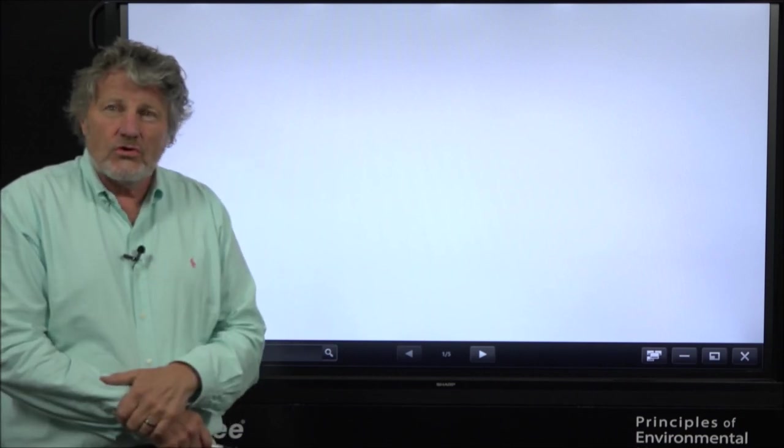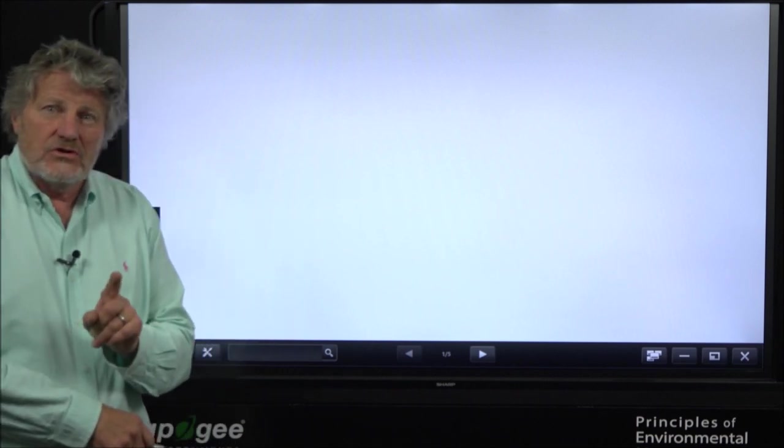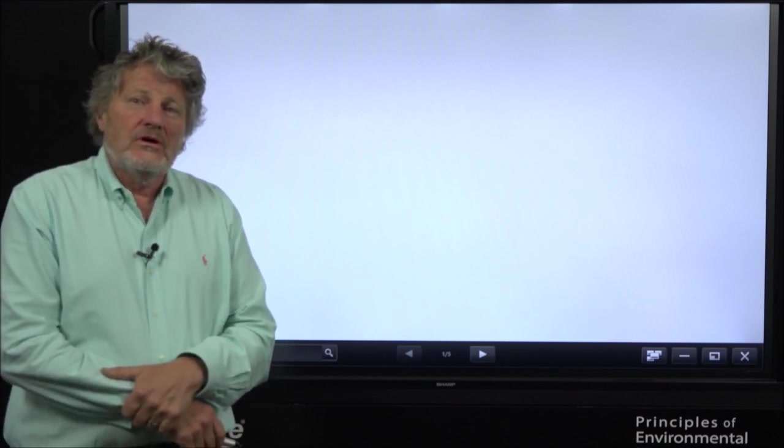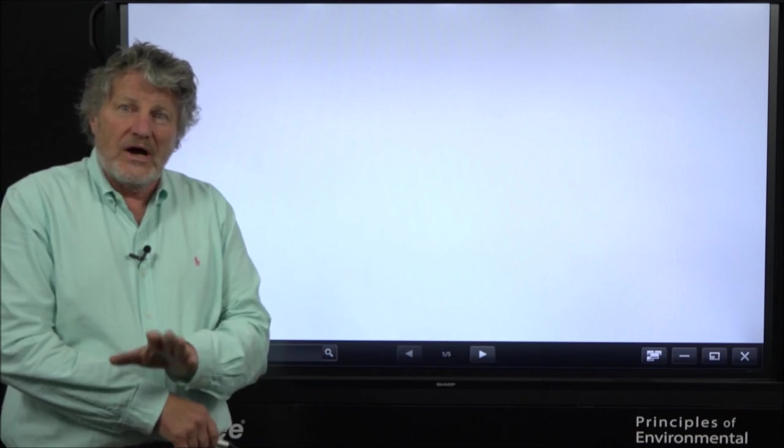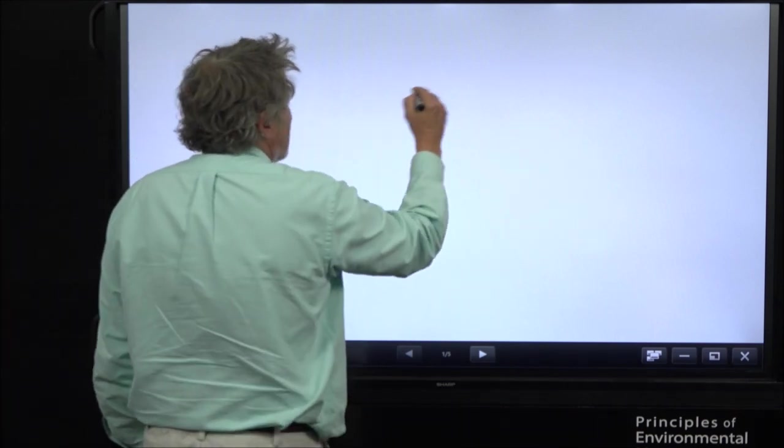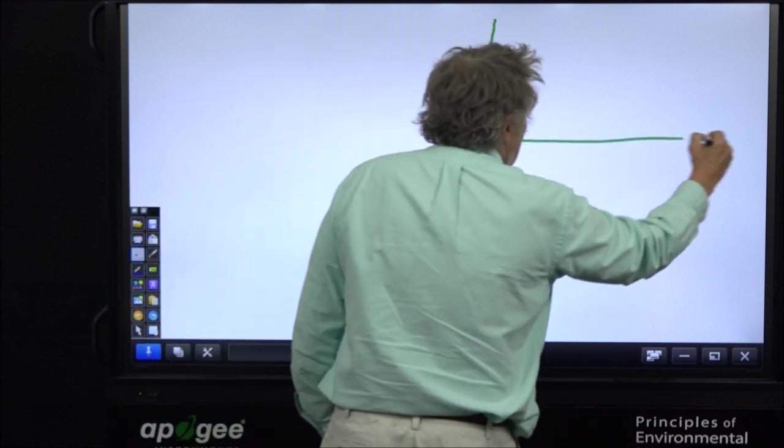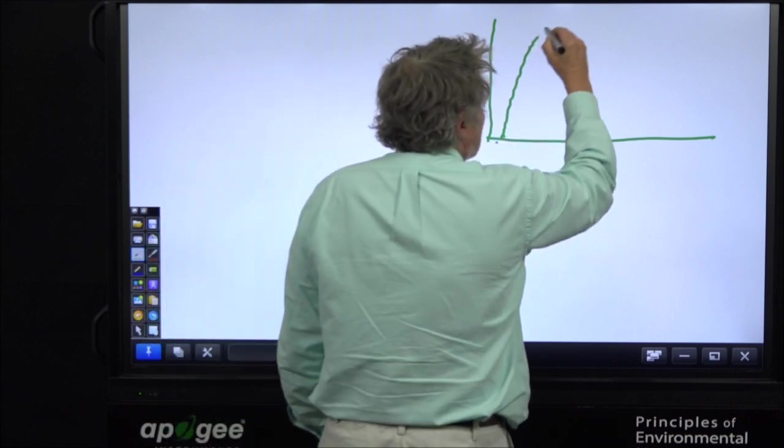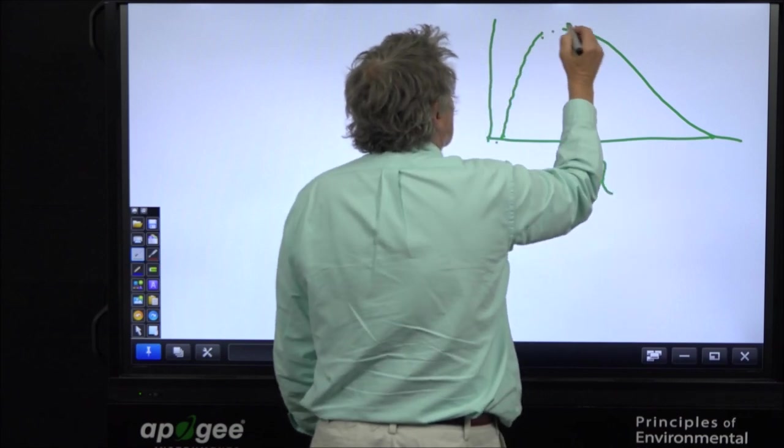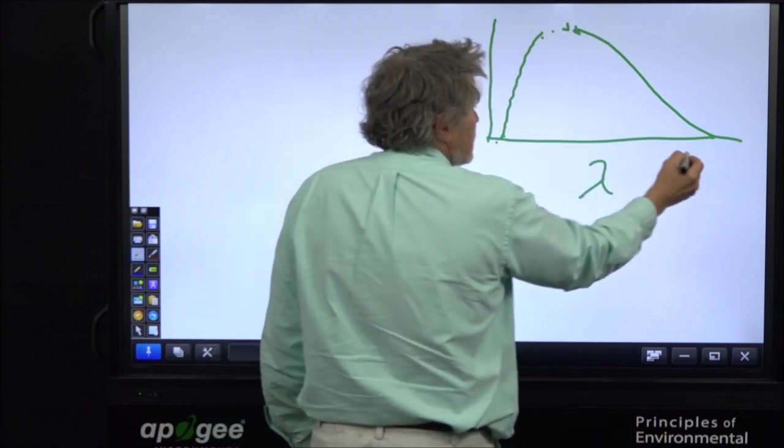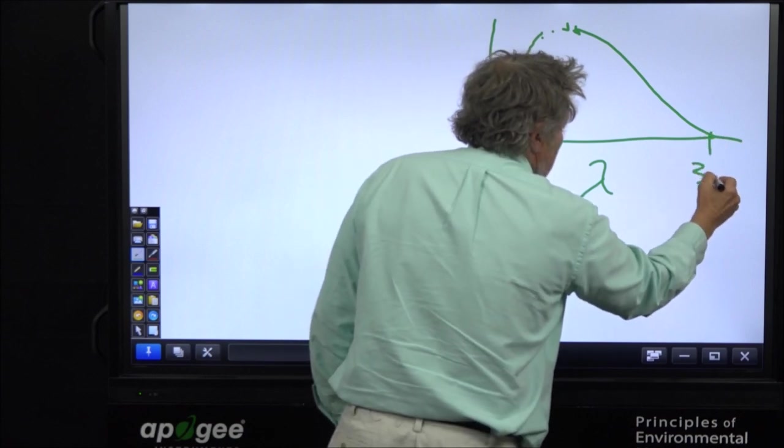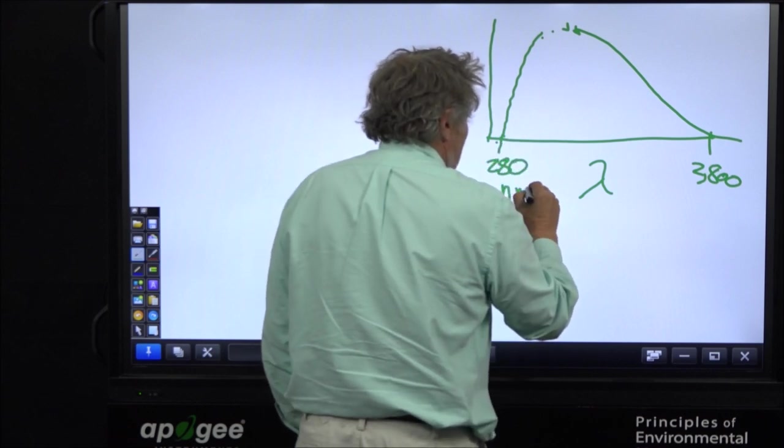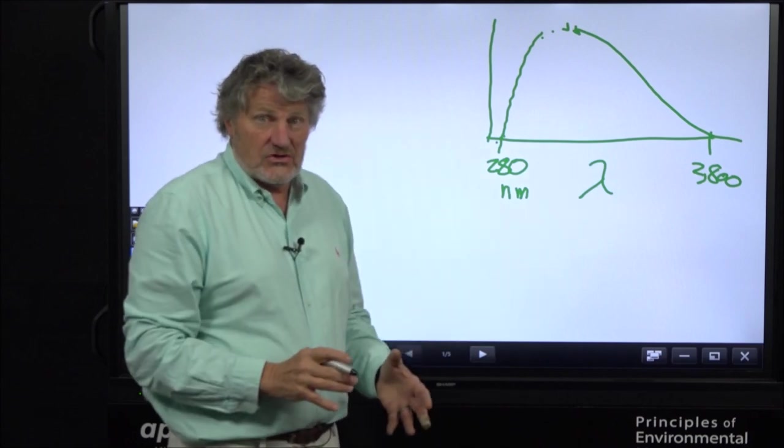This is going to be a short video, but I want to take you back to the 1960s when we used to measure radiation only with a pyranometer. Now this is going way back. Let me put this curve over here. Here's wavelength, and this is all short wave radiation. This is 2,800 nanometers out here, and this is about 280 nanometers right here. This is all short wave radiation from the sun.